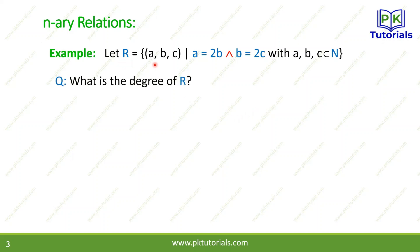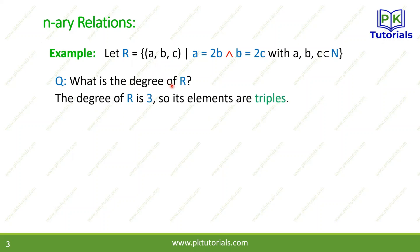Now the question is: what is the degree of R? This relation has degree 3, because a, b, c are three elements. The elements are triples in this relation — we have three elements — because this is the degree of the relation.